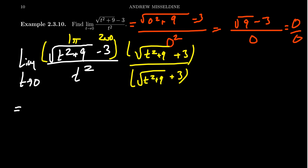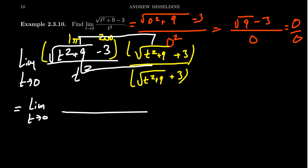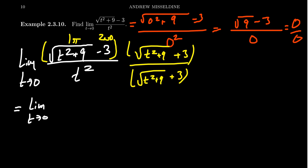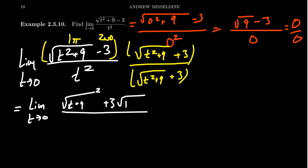Next, multiply out the numerator — that's the whole point of rationalizing the numerator. Going through a classic FOIL: take the first, outside, inside, and last. When you take the square root of t squared plus nine times itself, you get the square root of t squared plus nine, quantity squared. Then you get three times the square root, then negative three times that same square root, and last, negative three times positive three, which is minus nine.